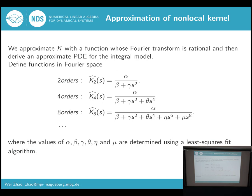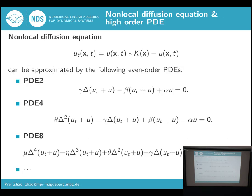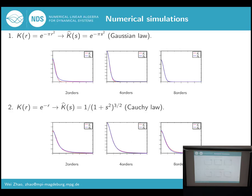We can then derive an approximate PDE for the non-local equation. We define several functions in Fourier space. These functions have an even order, where α, β, γ, θ, η, and μ are parameters that can be determined using a least-squares-phase algorithm. If our assumption holds, then the non-local equation can be approximated by the following even-order PDEs: order 2, 4, 8, and others. We test this idea using two different non-local kernels, and from the figures we can see that the results are very good, validating the idea.